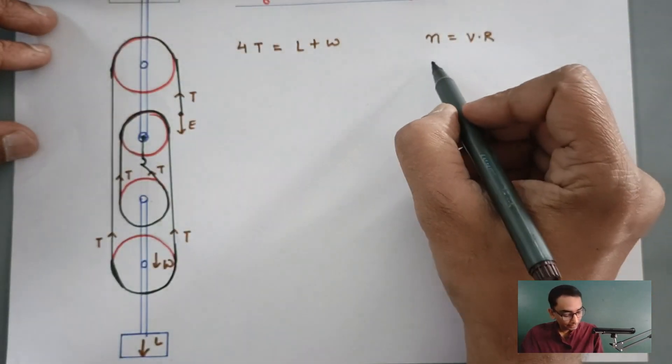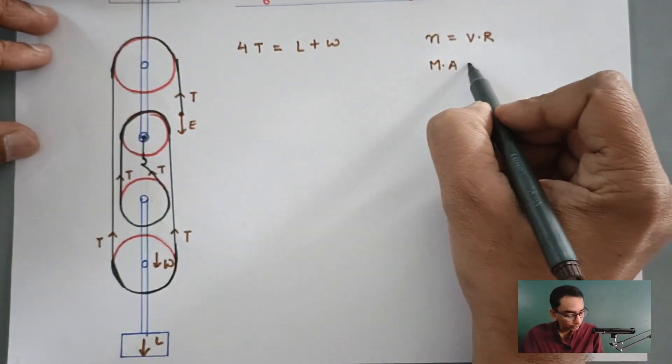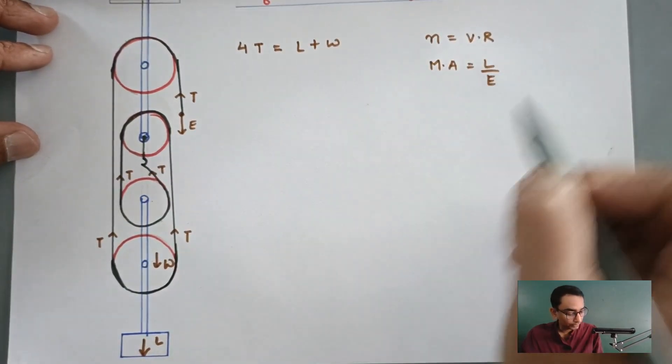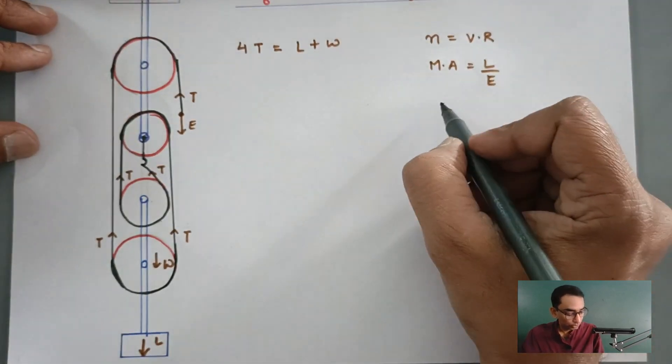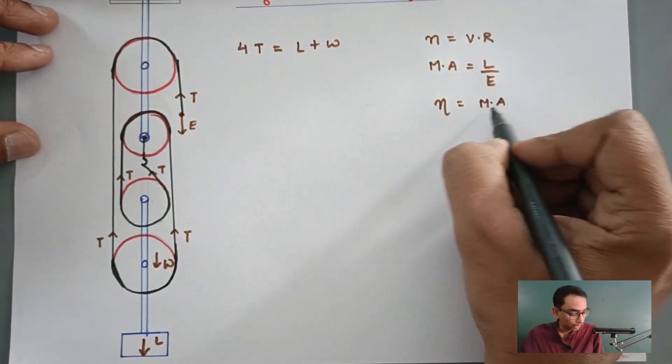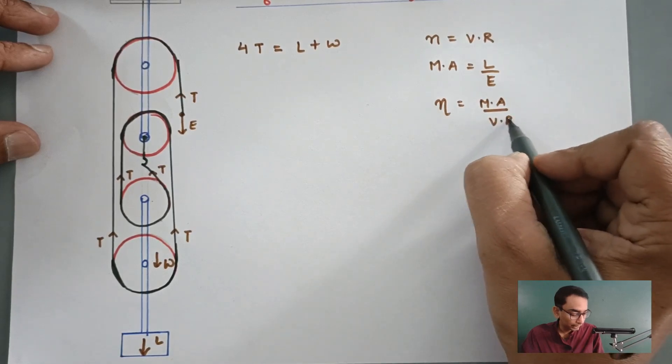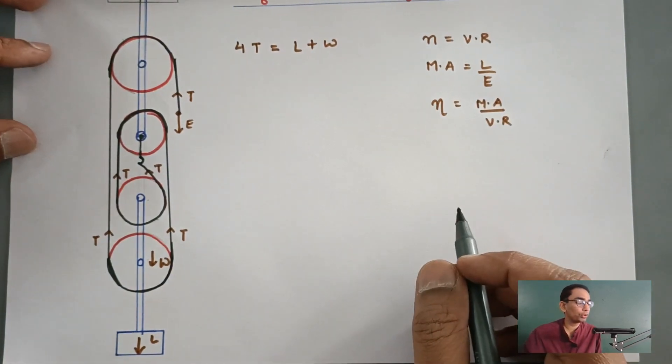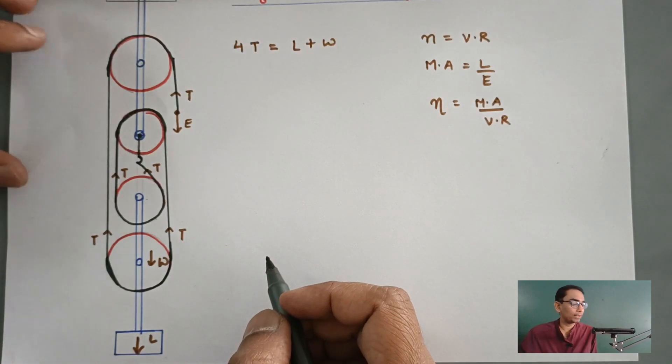One more thing that the mechanical advantage is equal to load upon effort. We also know that efficiency is equal to mechanical advantage upon velocity ratio. These formulas we are going to use and we are going to establish a relationship.